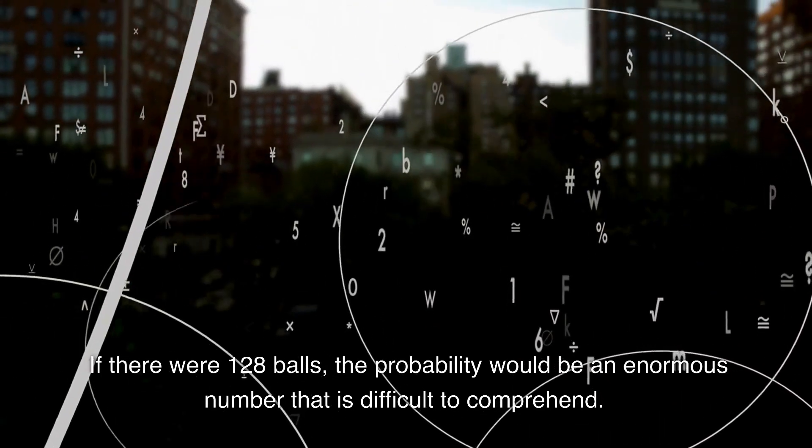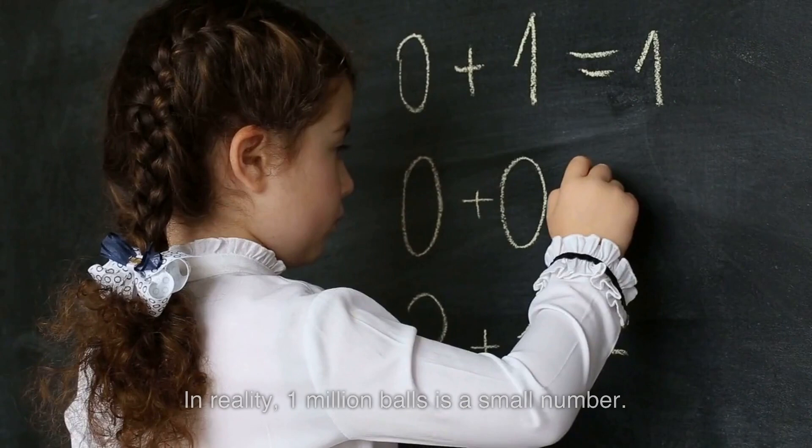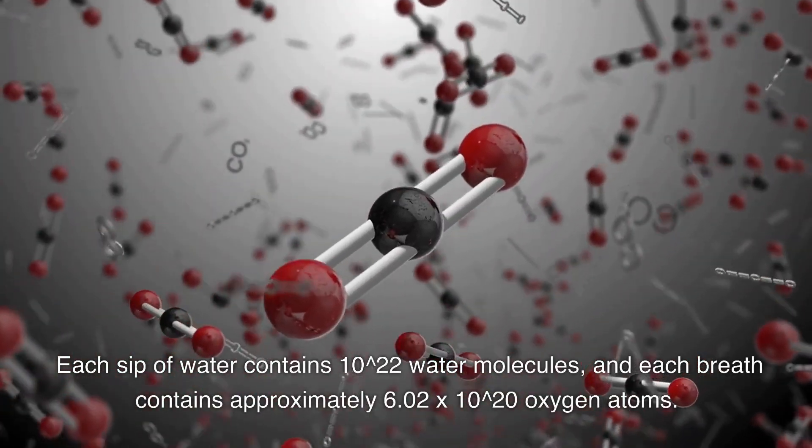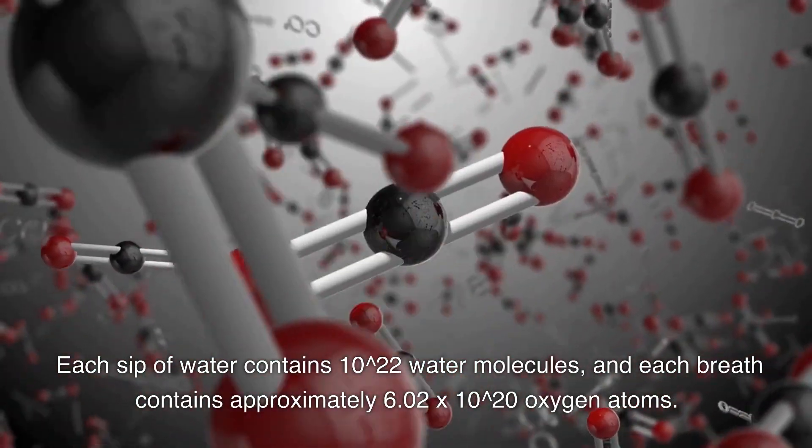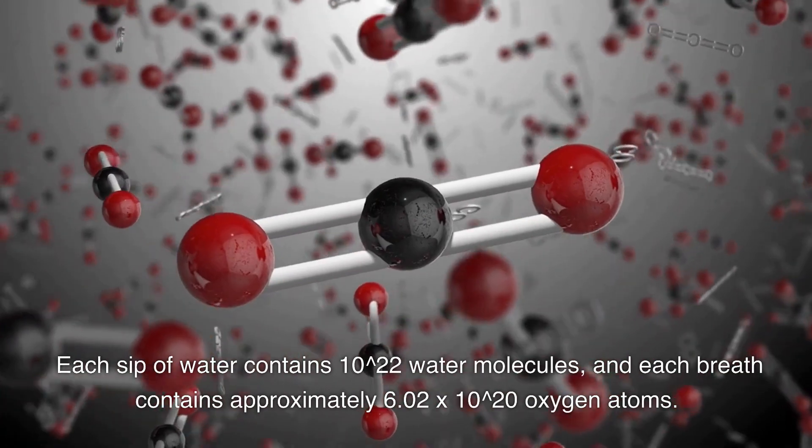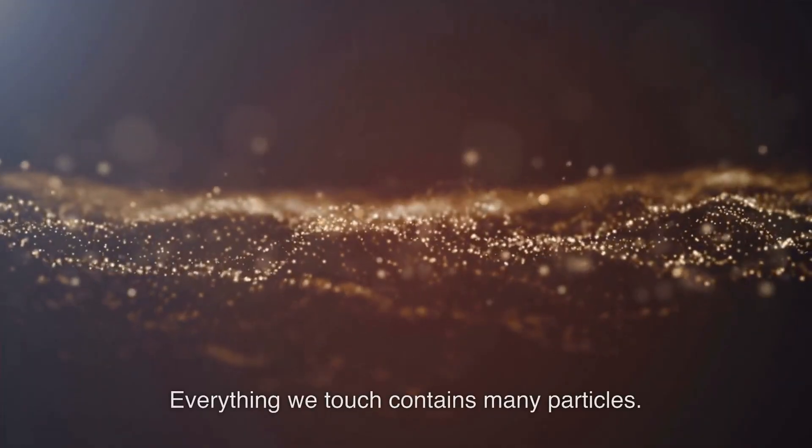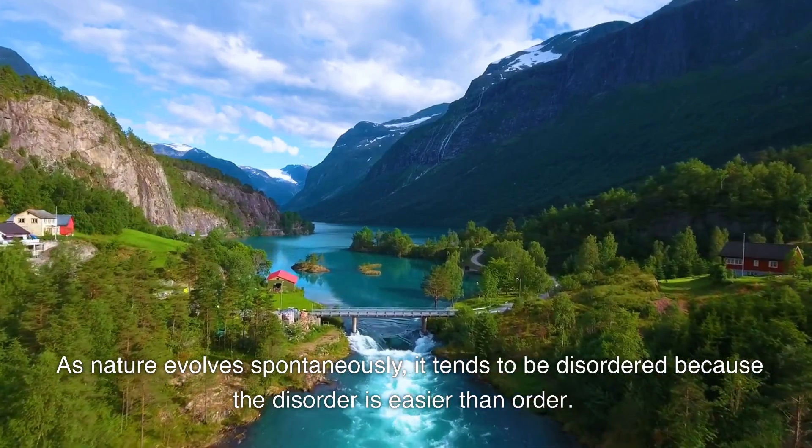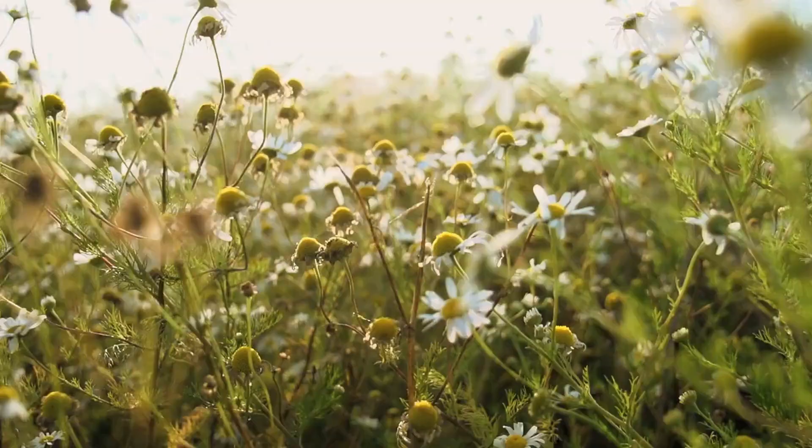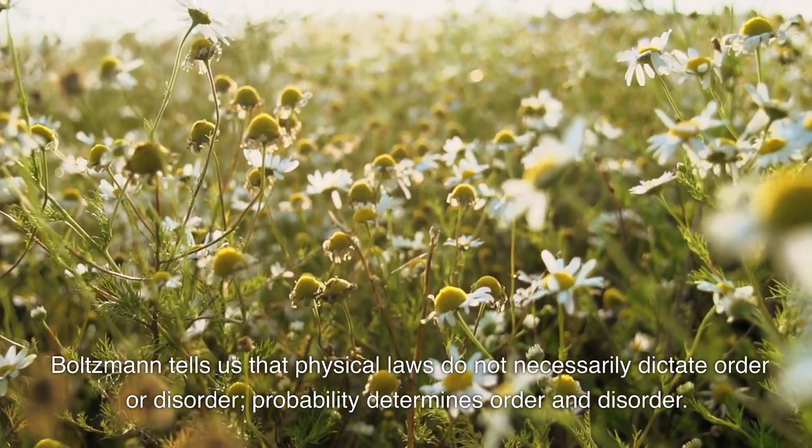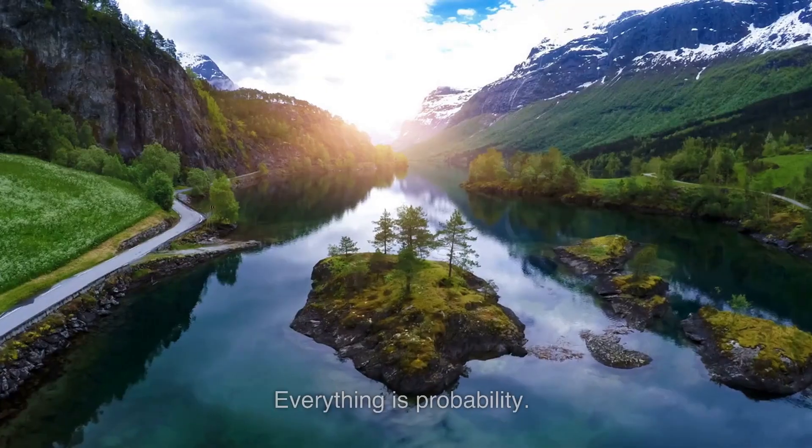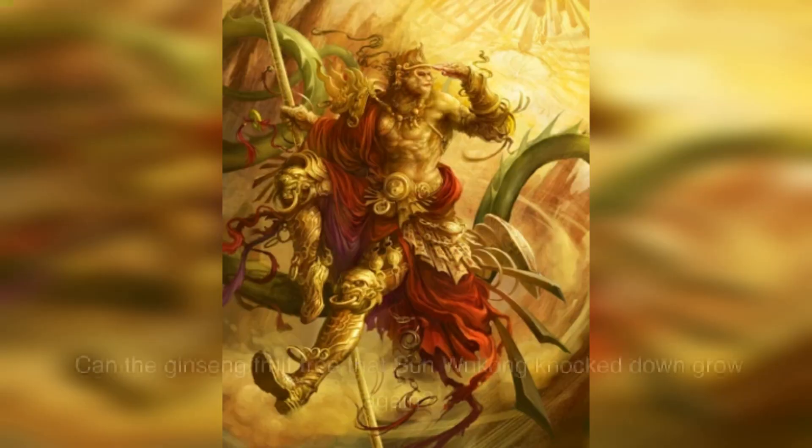In reality, one million balls is a small number. Each sip of water contains 10^22 water molecules, and each breath contains approximately 6.02 × 10^20 oxygen atoms. Everything we touch contains many particles. As nature evolves spontaneously, it tends to be disordered because disorder is easier than order. Boltzmann tells us that physical laws do not necessarily dictate order or disorder; probability determines order and disorder. Everything is probability. Can the ginseng fruit tree that Sun Wukong knocked down grow again?